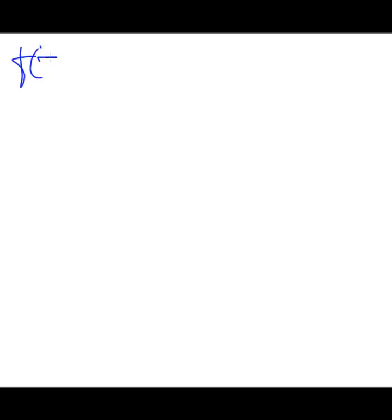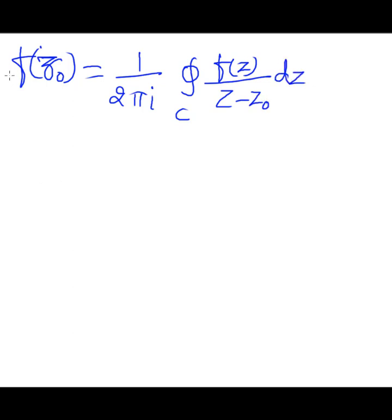F evaluated at z₀ equals 1/(2πi) times the integral over C of F(z)/(z-z₀) dz. So we will remember this formula. This is called Cauchy's integral formula.